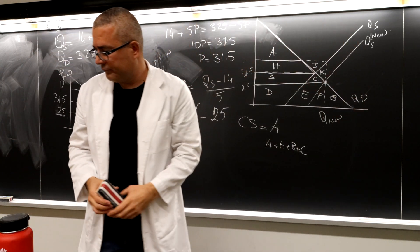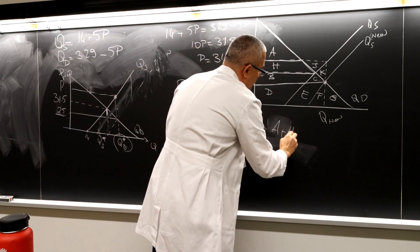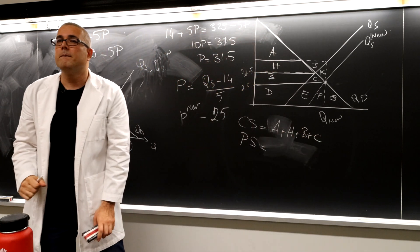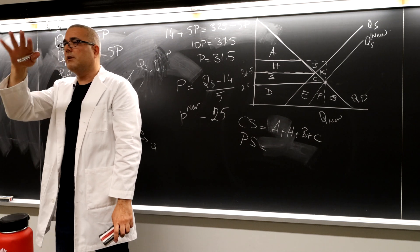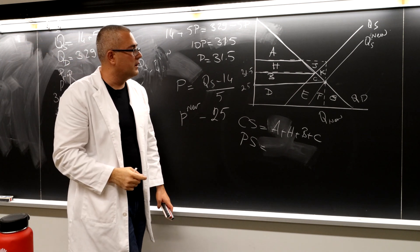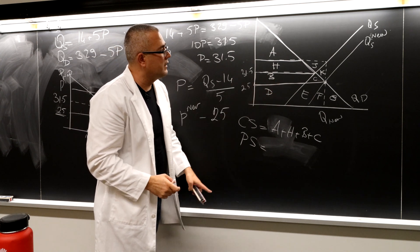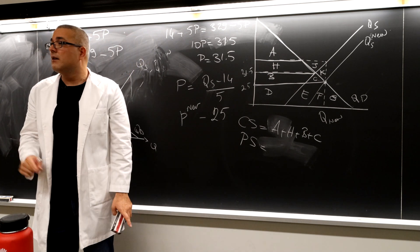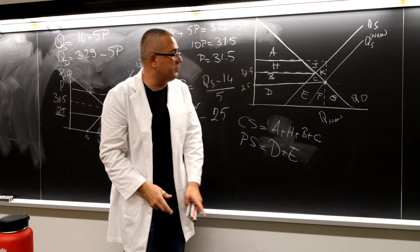Let me write it, A plus H plus B plus C. What about the producer surplus? The same reasoning, price minus the supply curve. What is it? B, C, and D. D and E. What about B and C?